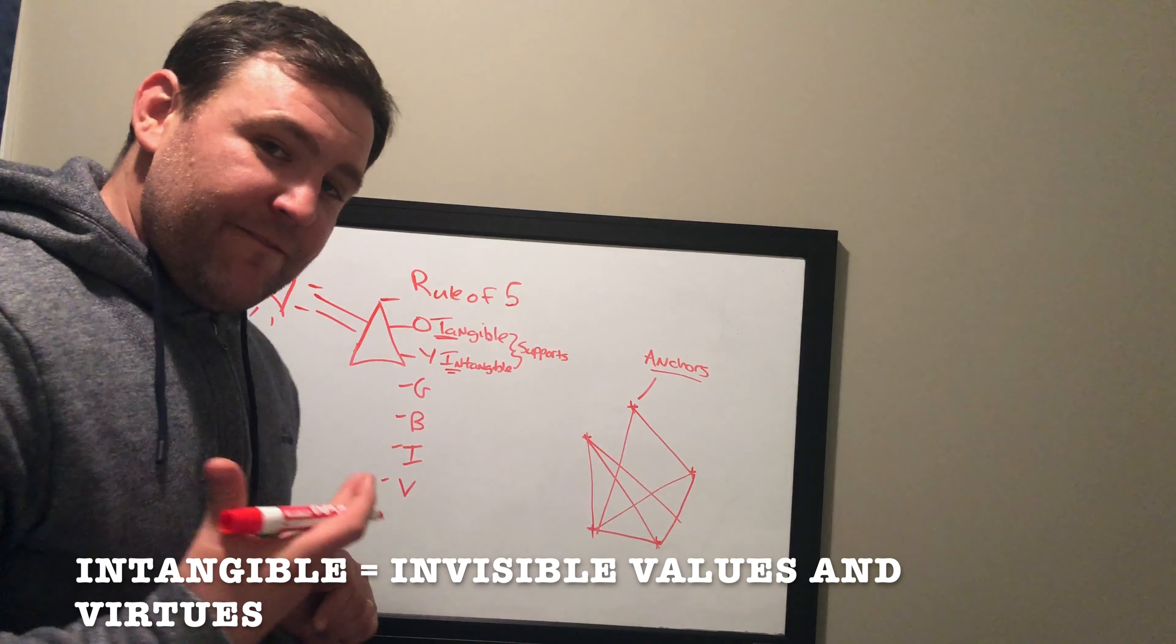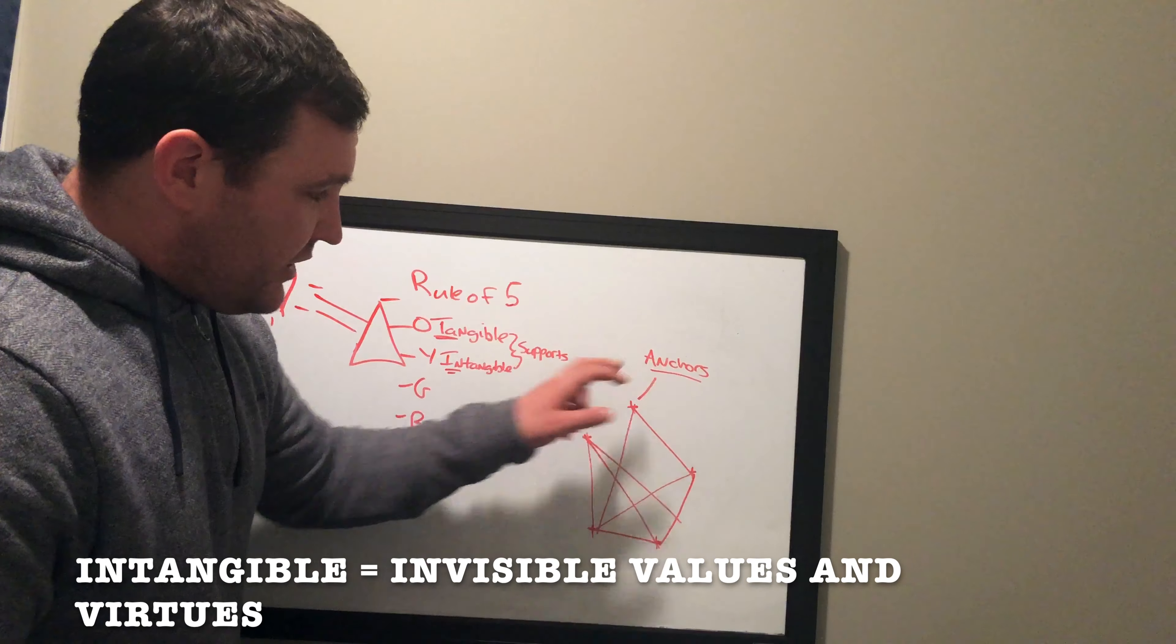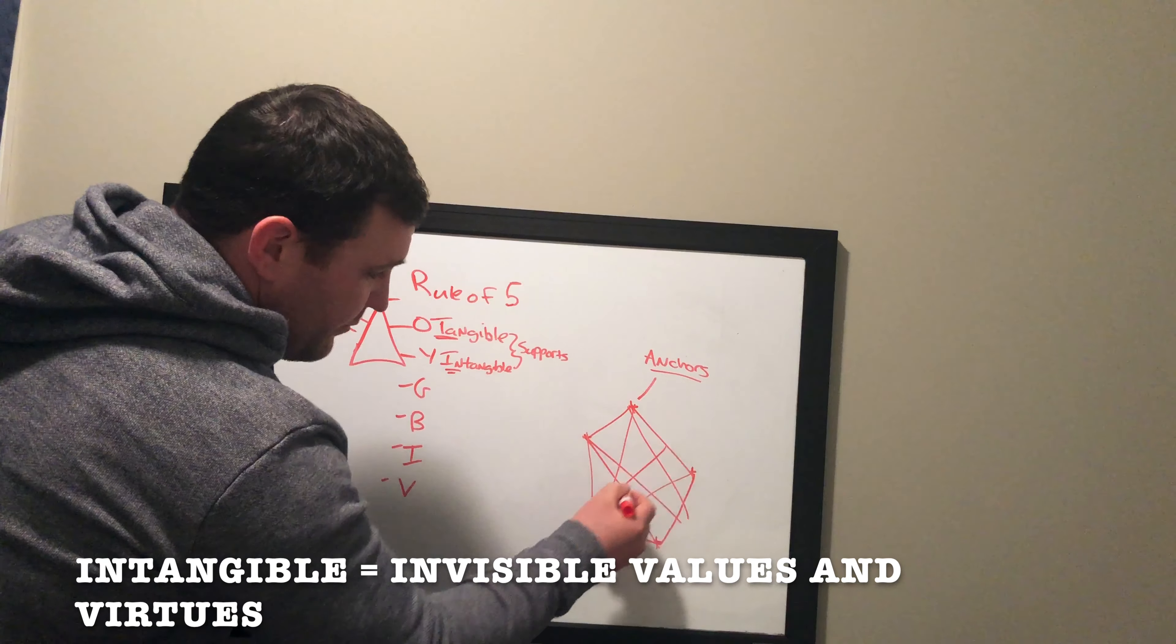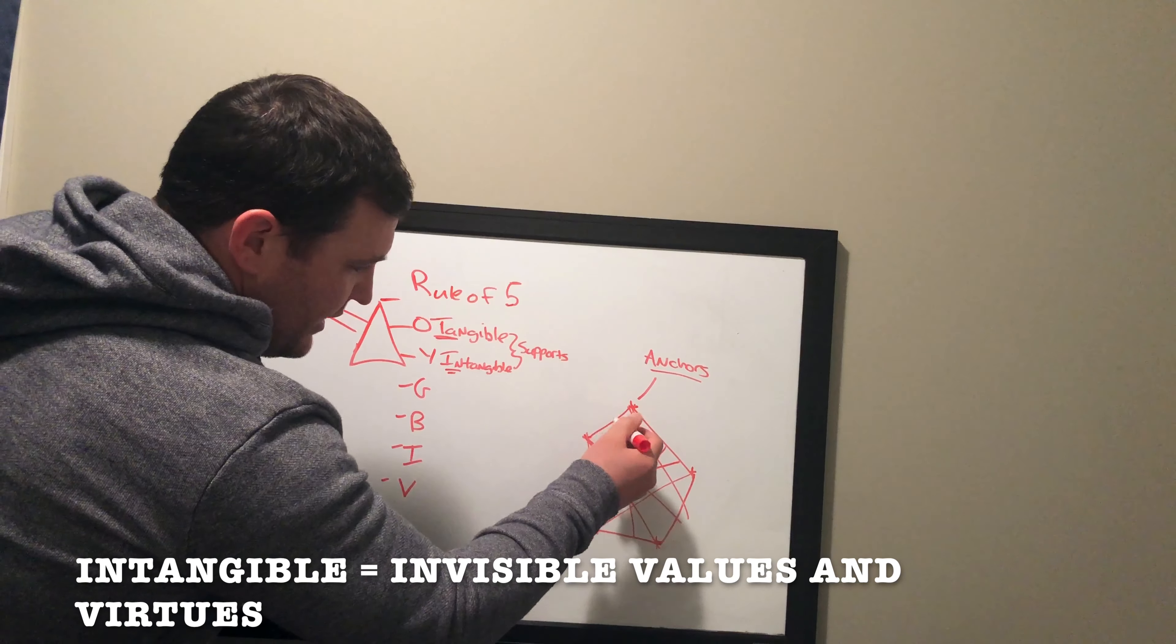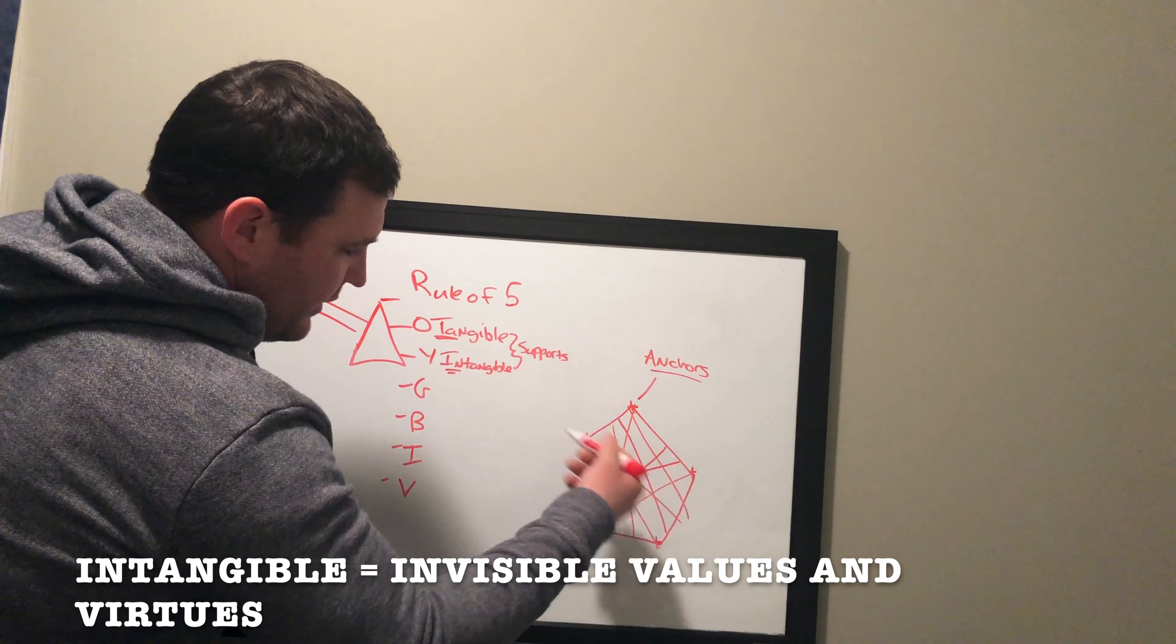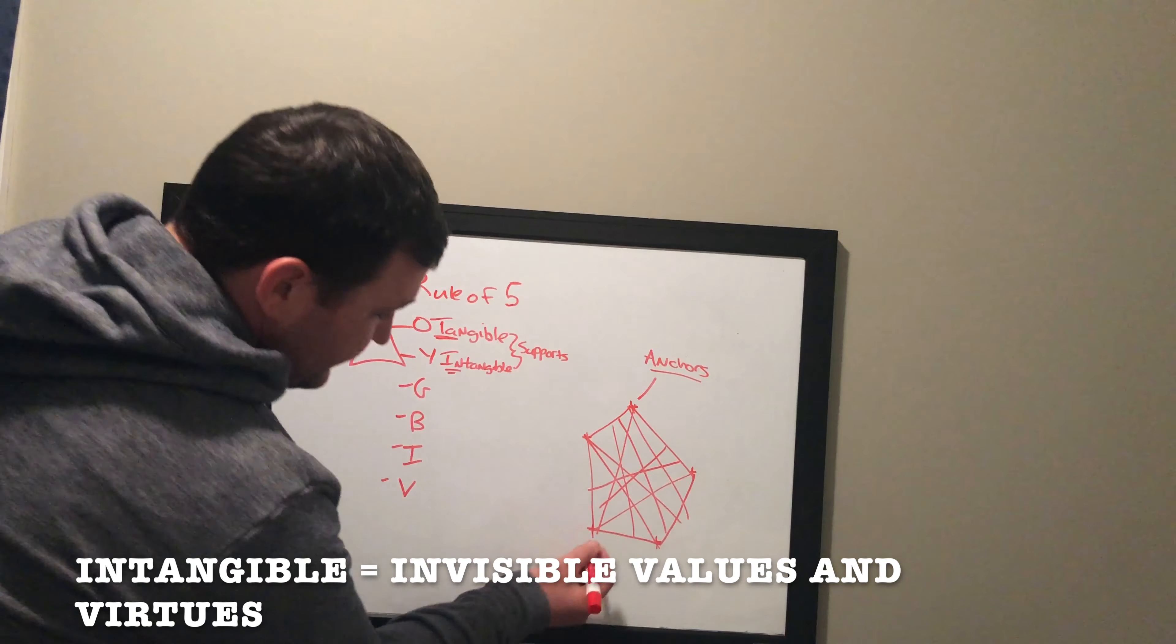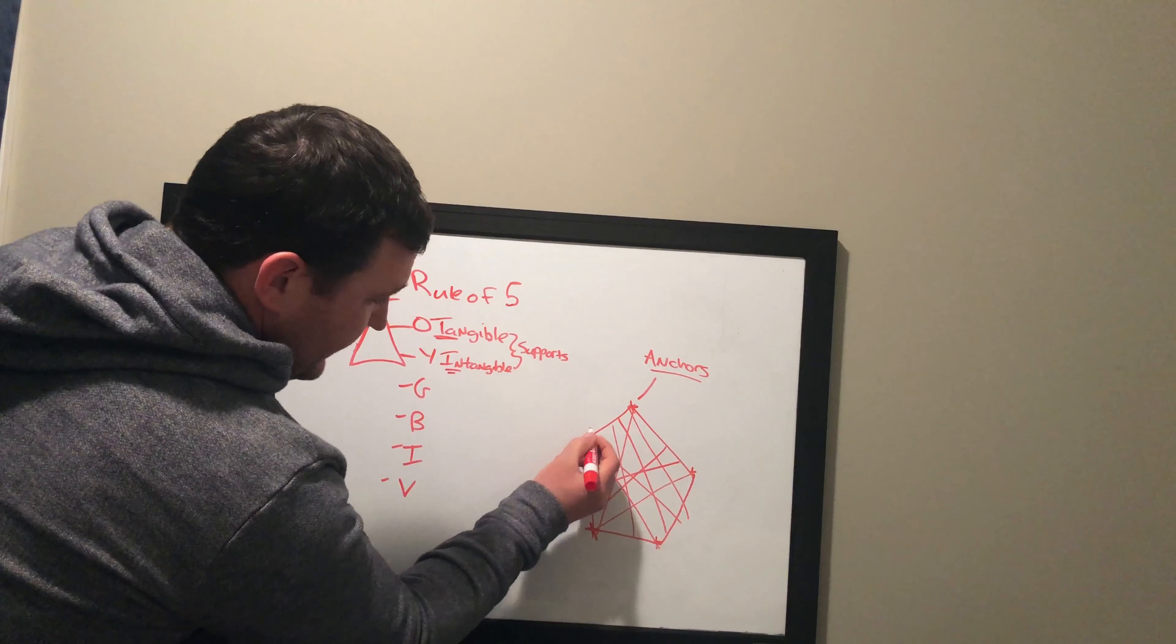Intangible are those invisible supports that we get from those key anchors that are like love, trust, compassion, honesty, integrity, support, and so on. The list can go on and on. And we get these strings from key adults.